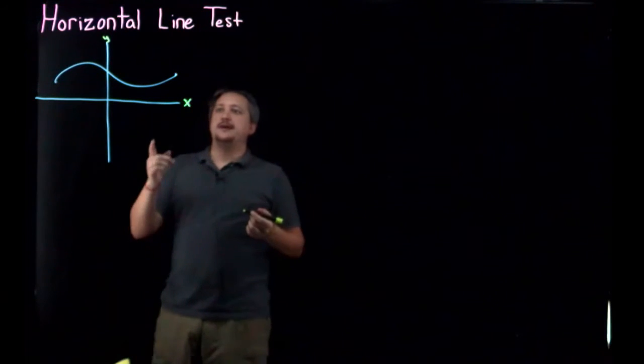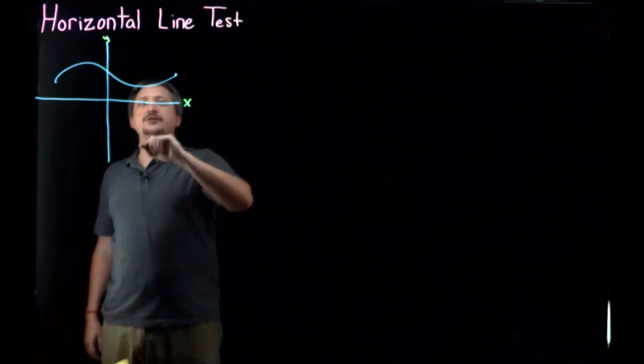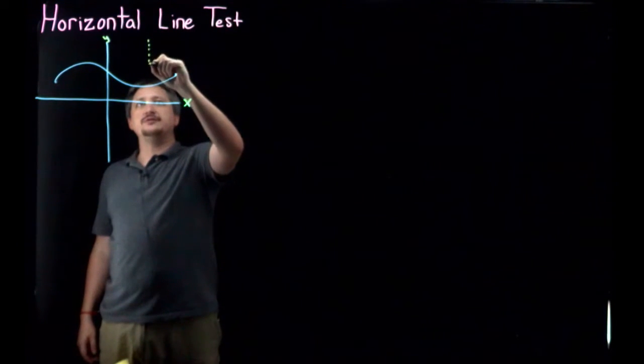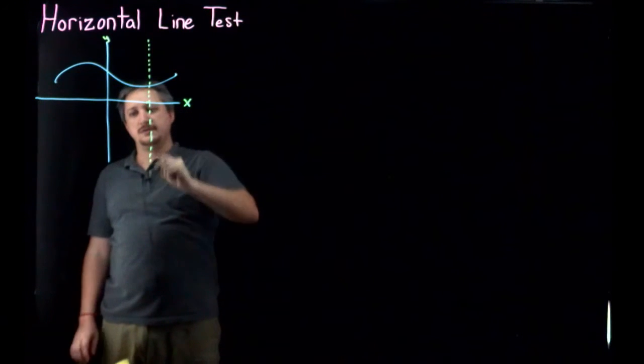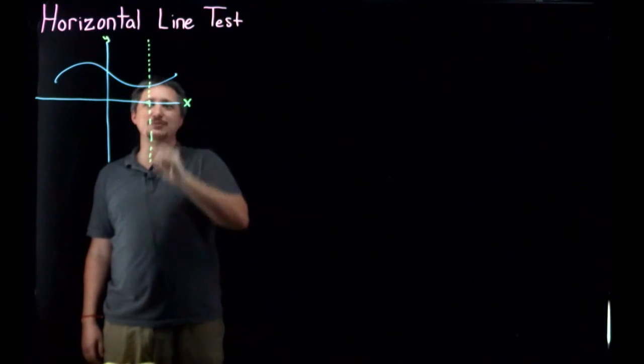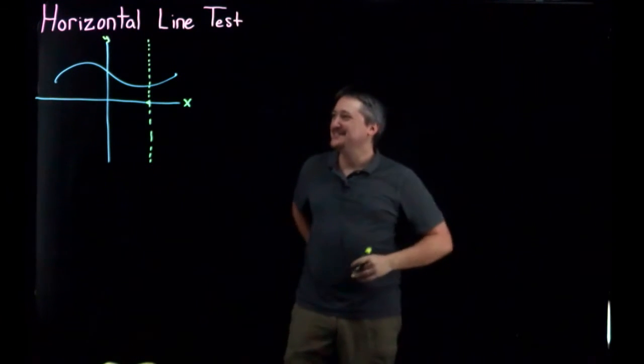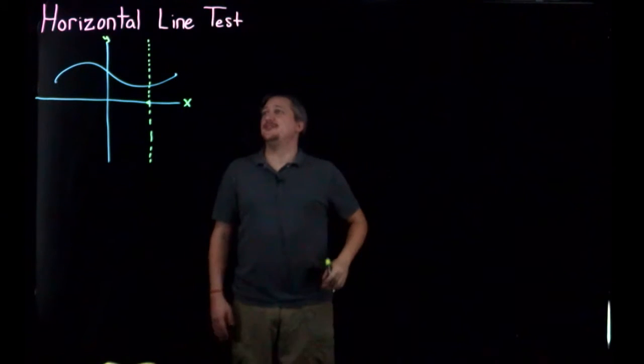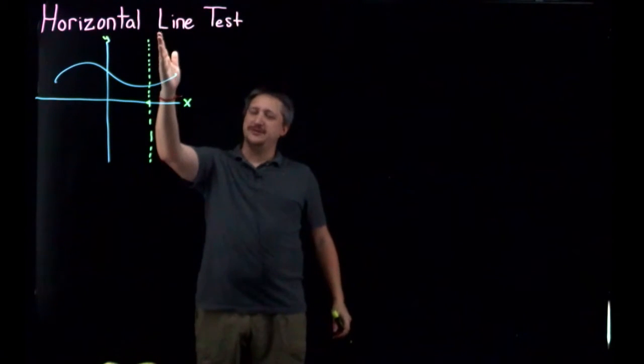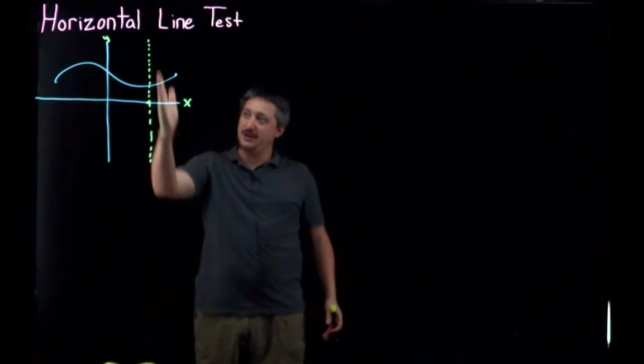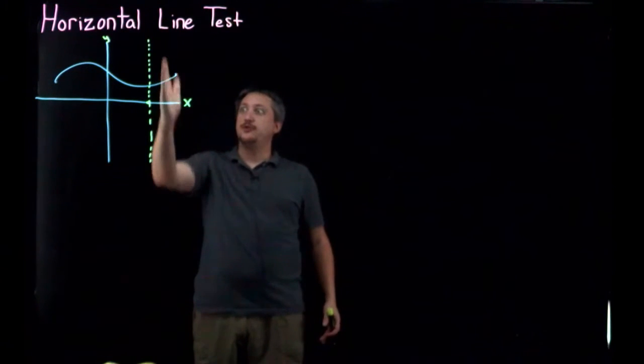And so one of the ways we did that would be to look at a specific output, some value, and then look at all possible outputs. Some input. So the idea was that we looked at all possible outputs, and we discovered that if we look at that geometrically, if we see what that looks like on a graph, it's really a vertical line.